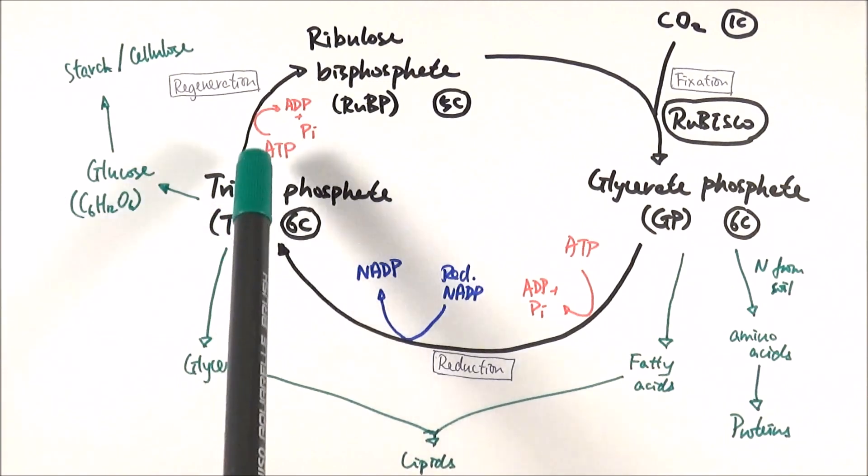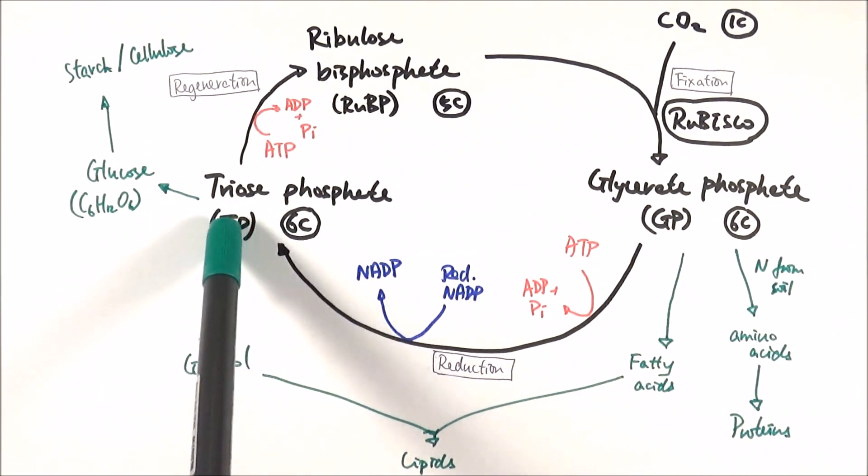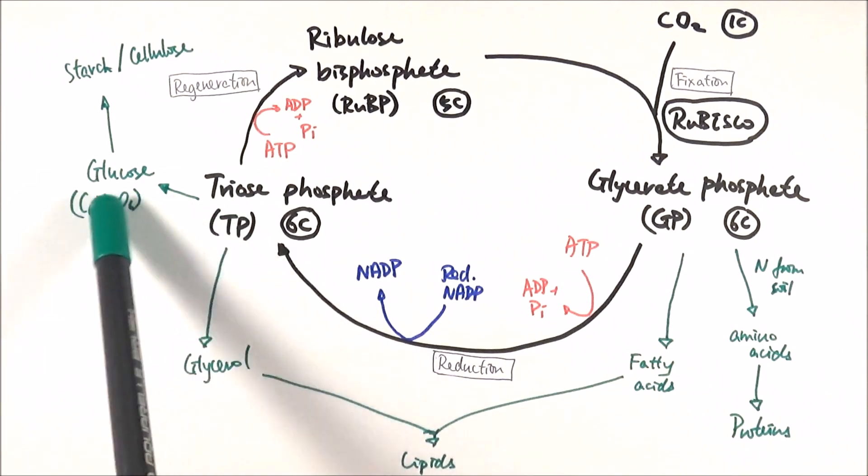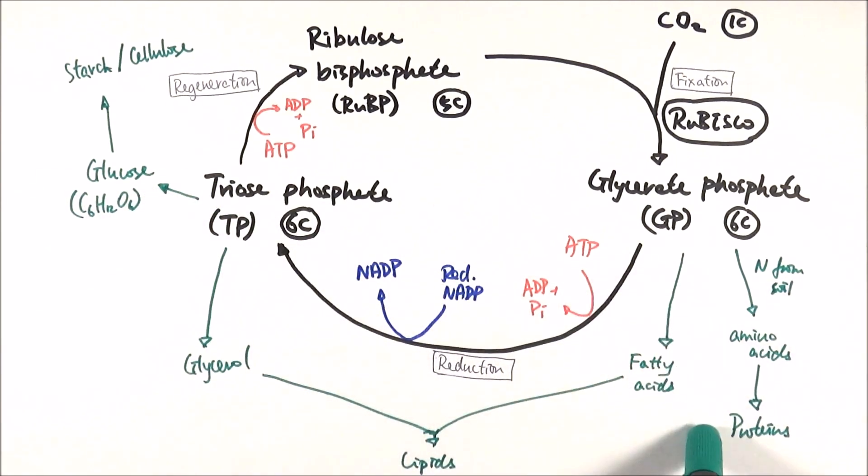Most of TP goes off to do regeneration. It's only once every couple of cycles that they go off to make these different products.